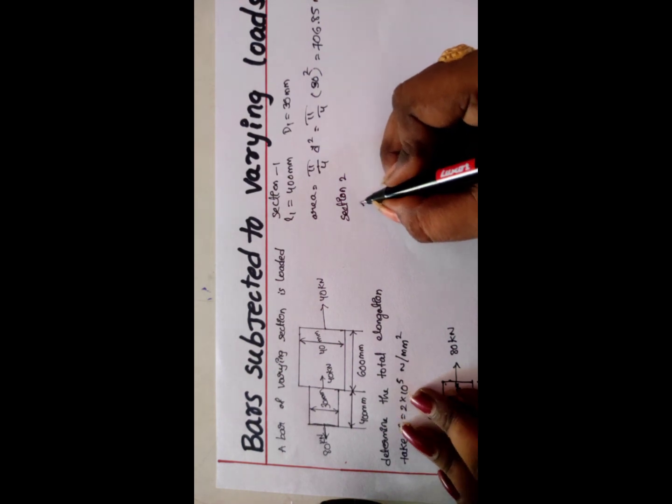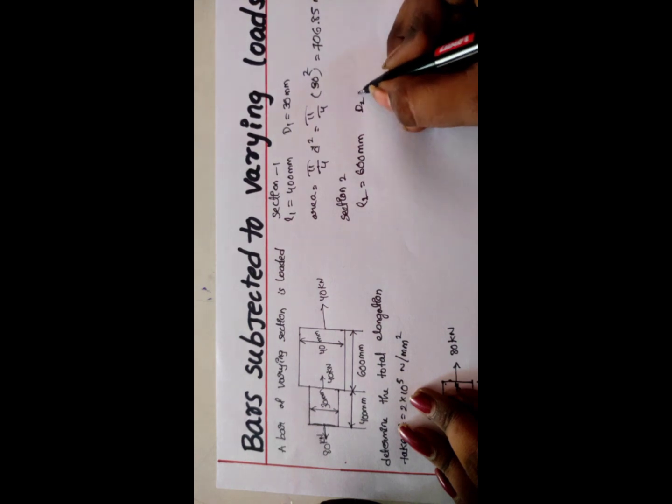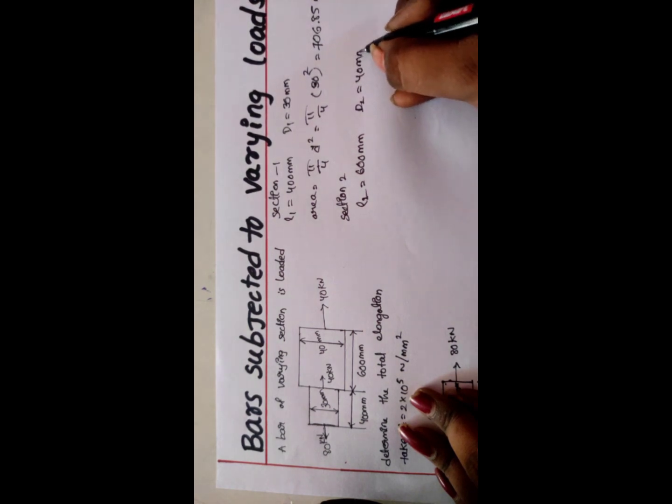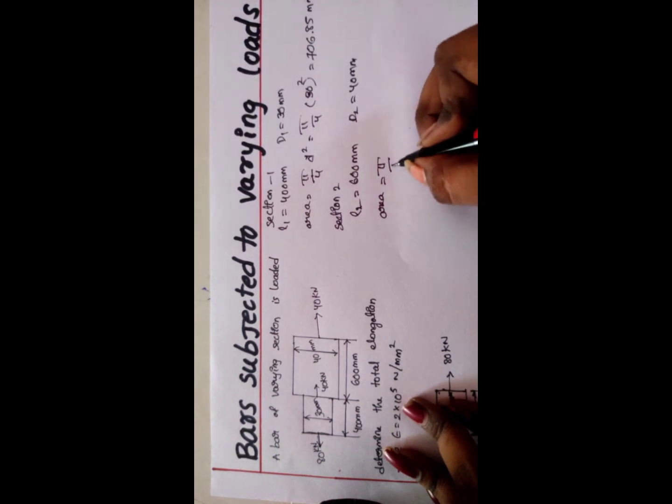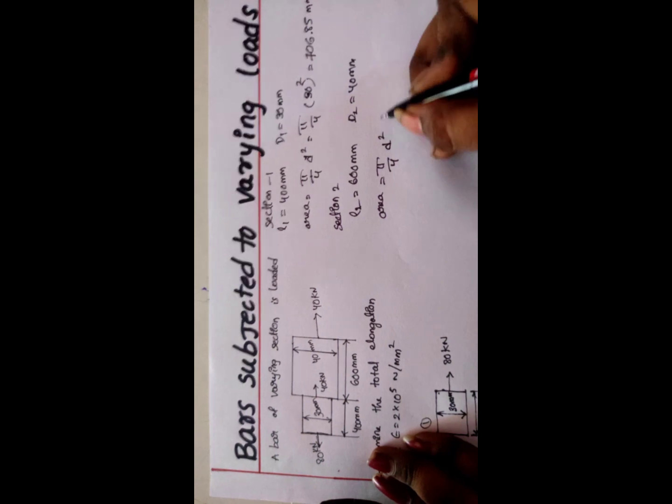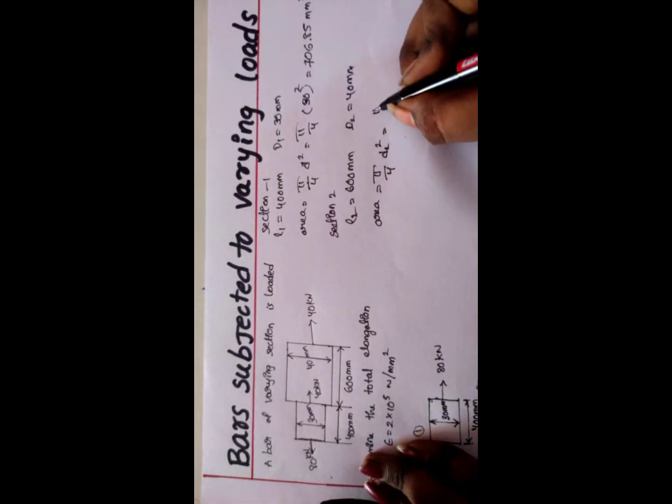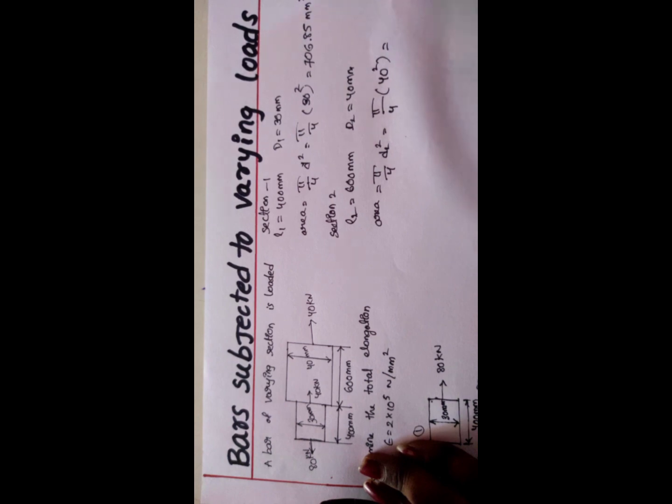L2 is equal to 600 mm and D2 is equal to 40 mm. Area is equal to π/4 × D².